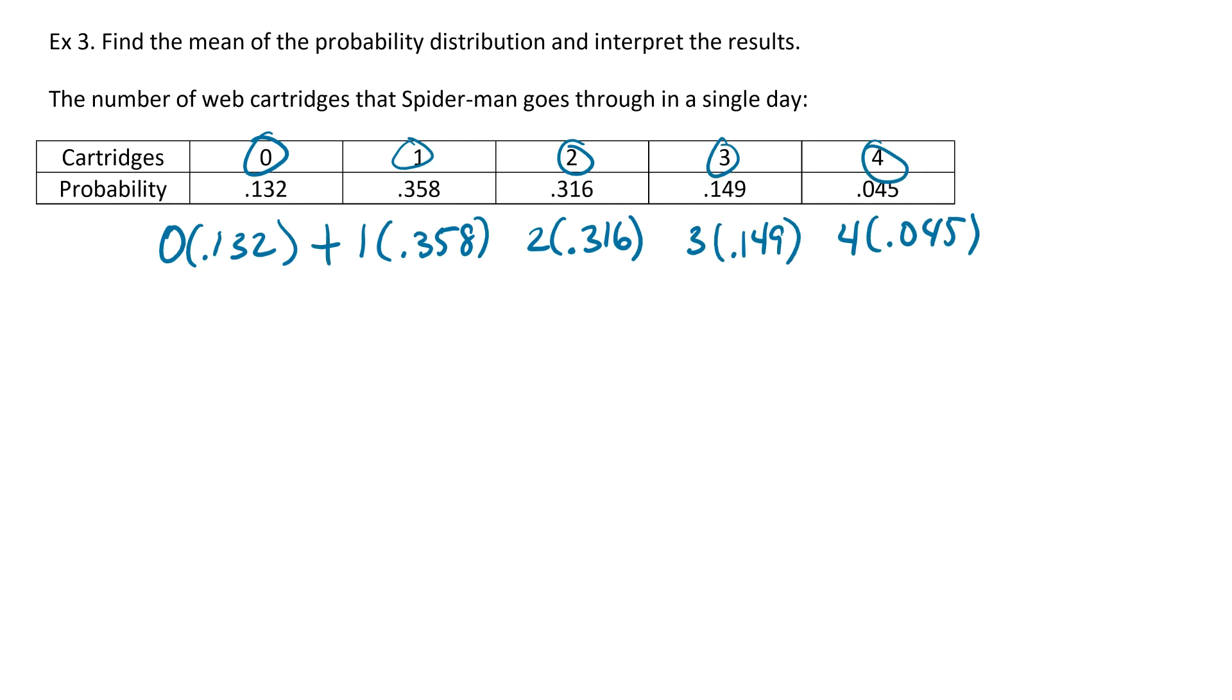Then we're going to add all of those up. You can just put this entire line in your calculator exactly how it is. Just make sure you use the parentheses whenever you're multiplying all these, and then add them all up. Whenever you do that, you should come up with 1.617.